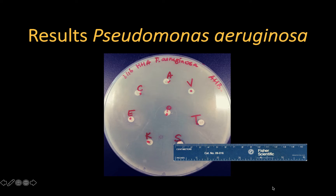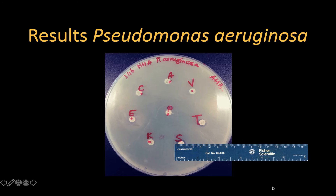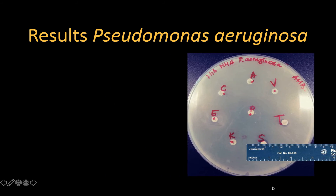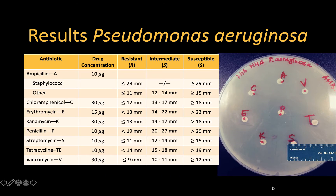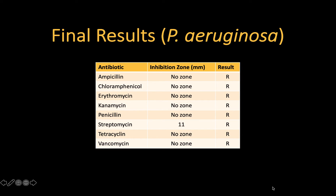Here is an example of a Kirby-Bauer test performed on the gram-negative bacillus Pseudomonas aeruginosa. Pause the video to determine the sizes and interpret with the table. Do these interpretations match your own?